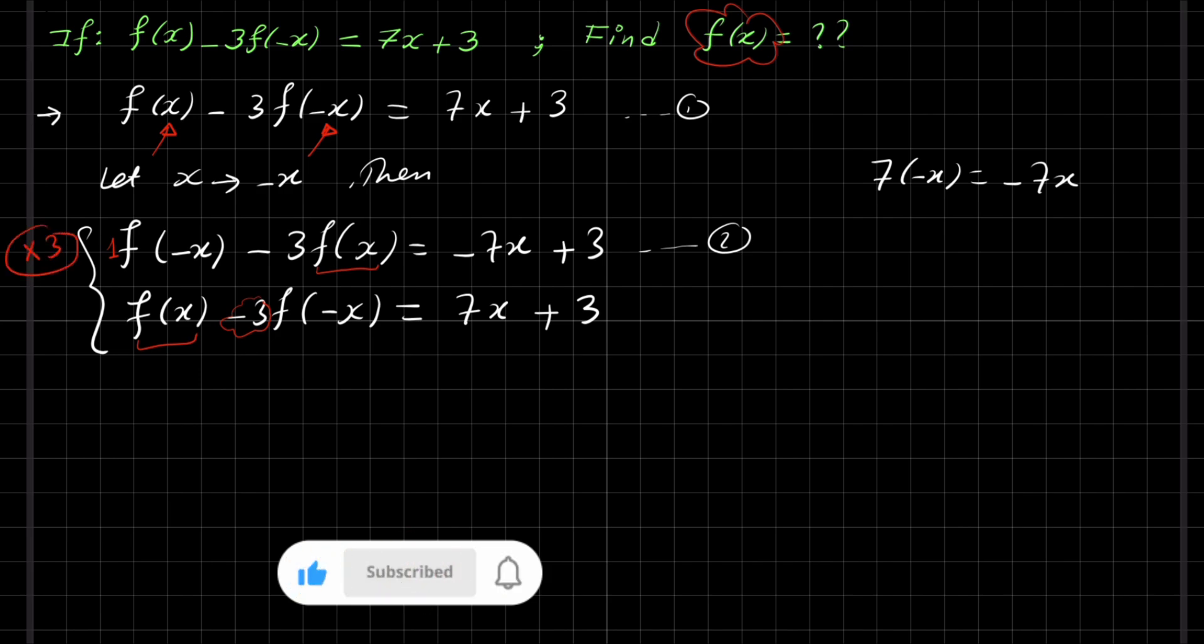So we get a new equation here. If we multiply by 3, we'll get 3 f of minus x minus 9 f of x equal minus 21x plus 9.